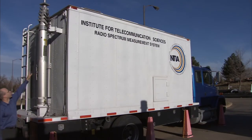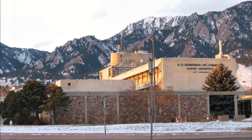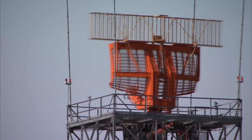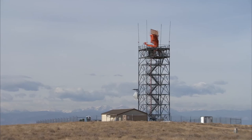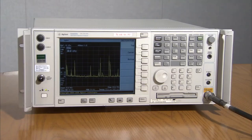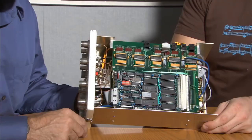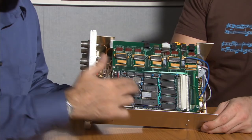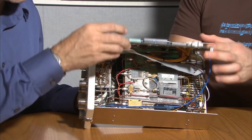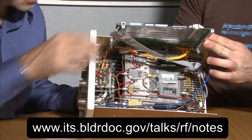My name is Frank Sanders. I'm the head of the Telecommunications Theory Division at the Institute for Telecommunications Sciences, a laboratory of the National Telecommunications and Information Administration, NTIA, located in Boulder, Colorado. Over the past 30 years, we've developed a series of techniques for measuring emissions from various types of radio emitters, in particular from radar transmitters. In this series of talks, I will begin by describing the fundamentals of RF measurement techniques and culminate the series by describing our techniques for measuring emissions from radar systems — techniques that you can implement yourself. Accompanying this series are notes available on our website and NTIA reports you may find useful.